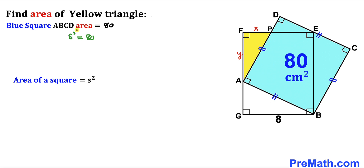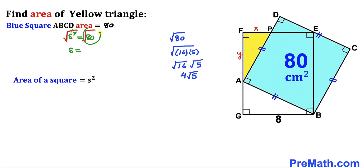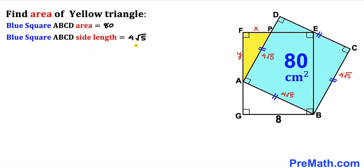Let's undo this square by taking a square root on both sides. So S equals the square root of 80, which simplifies to 4 times the square root of 5. Therefore the side length S of the blue square is 4√5.